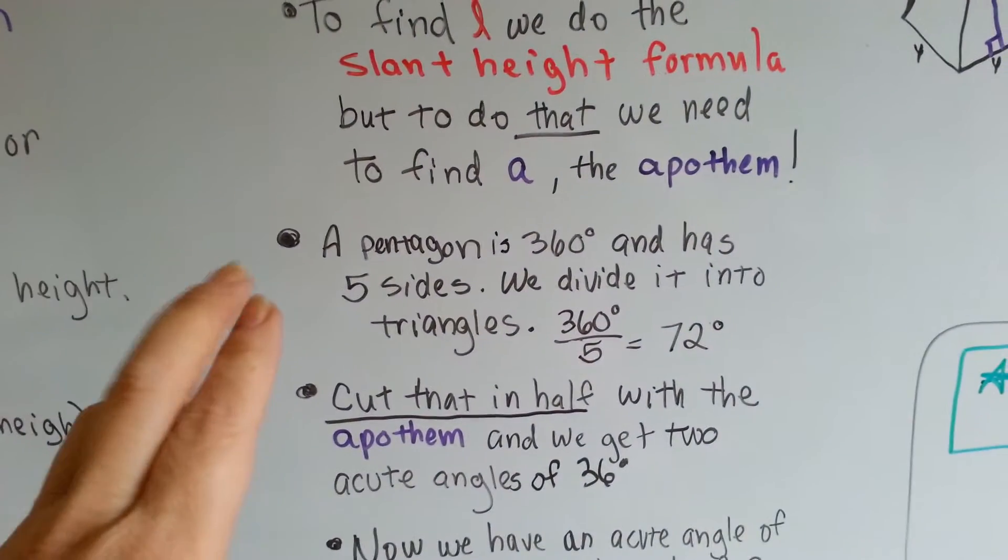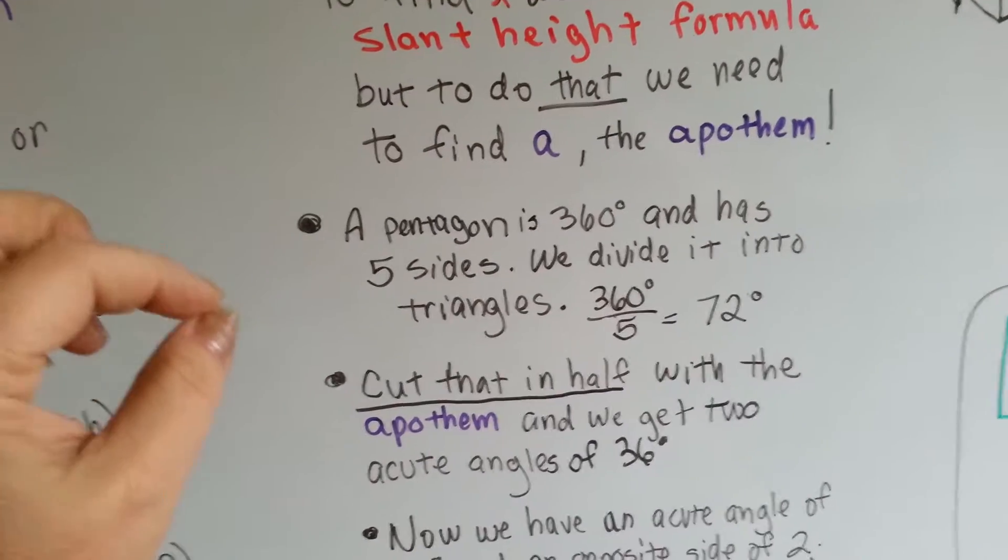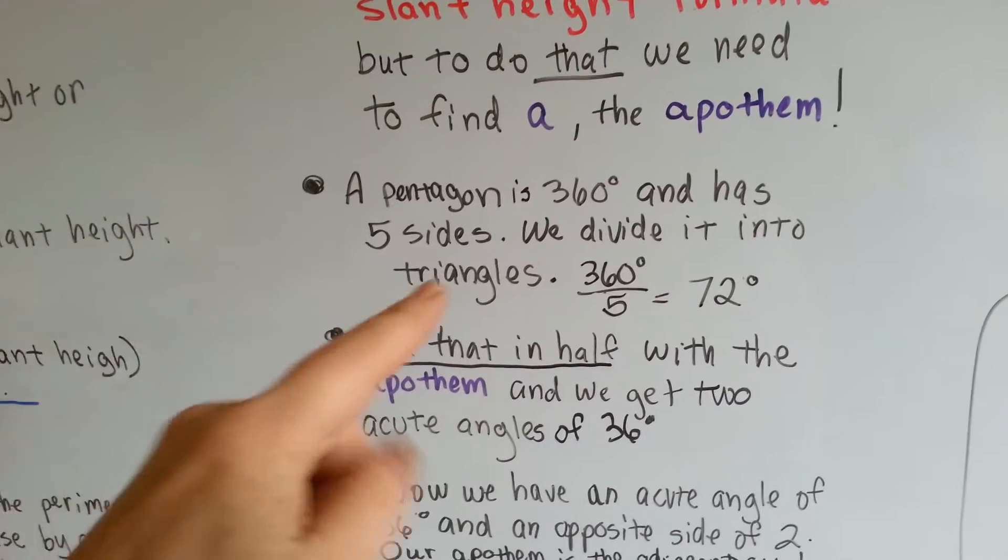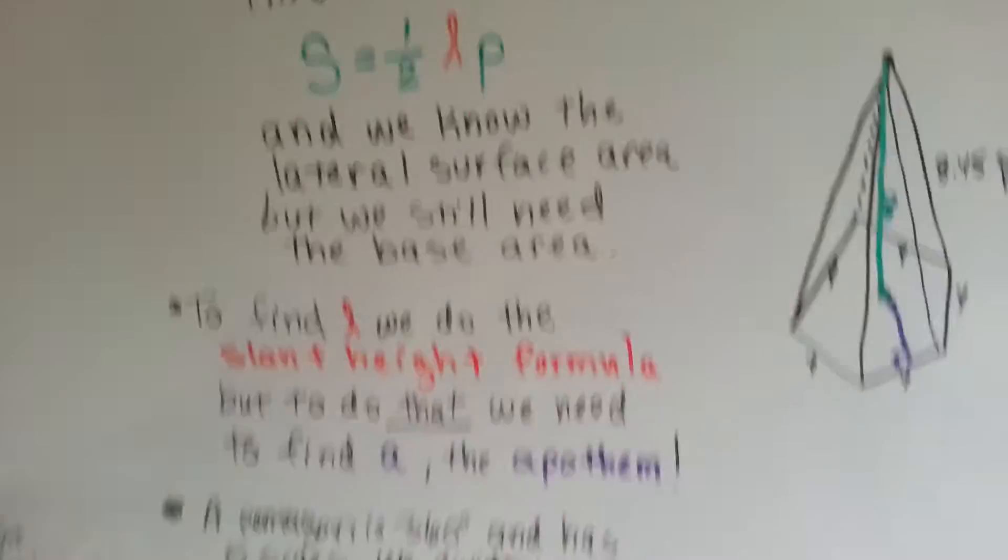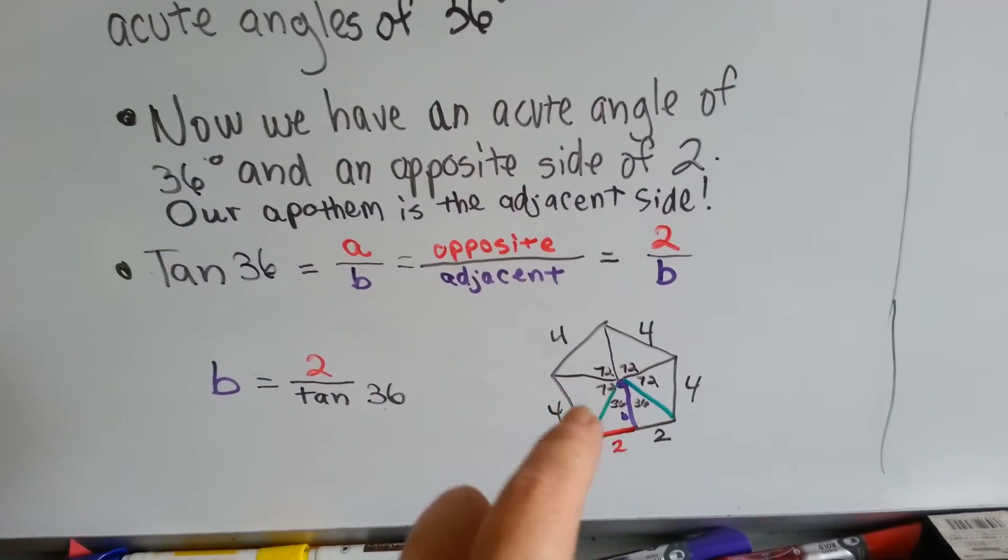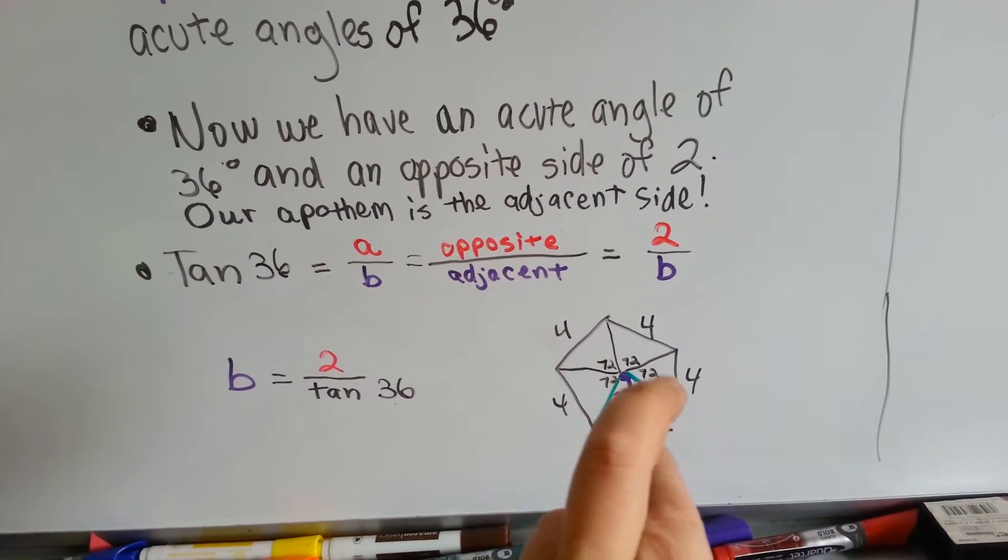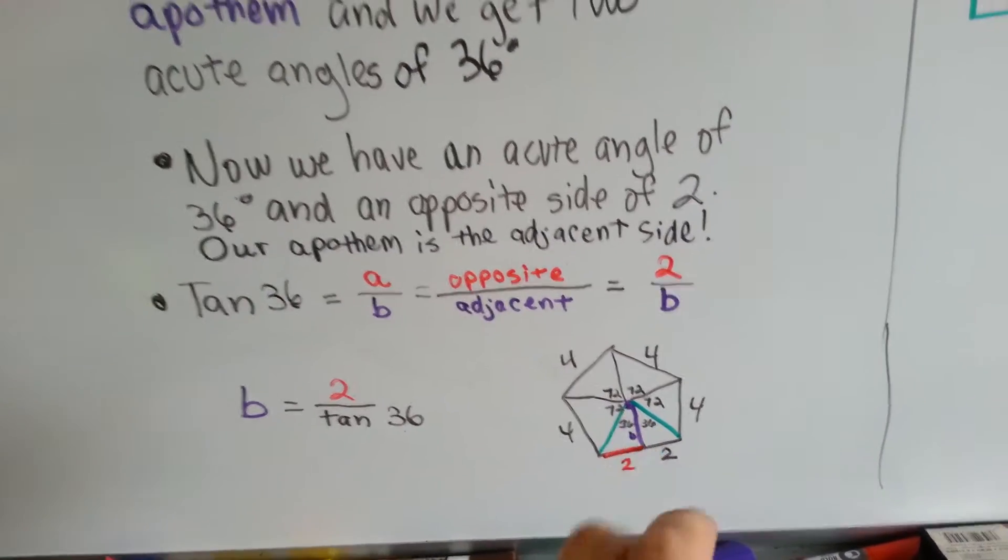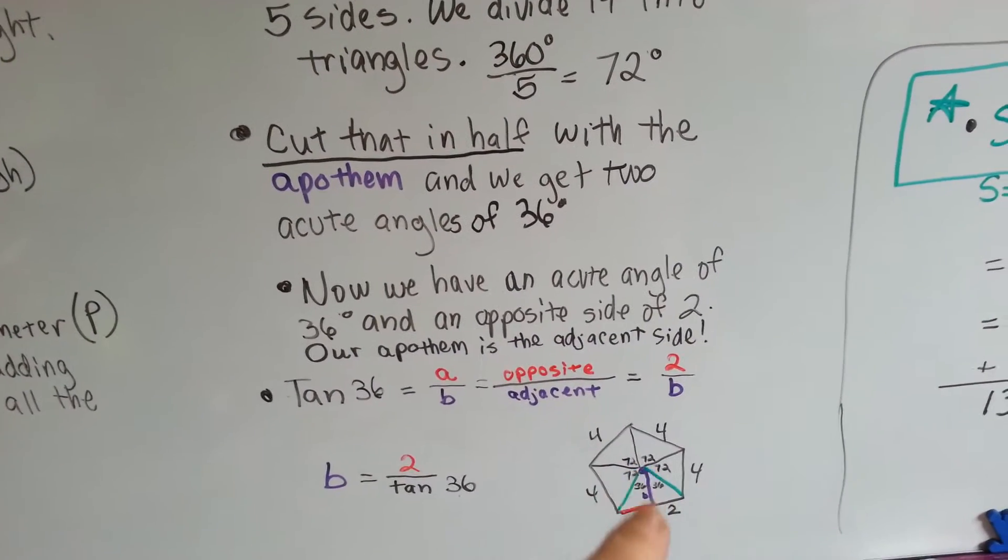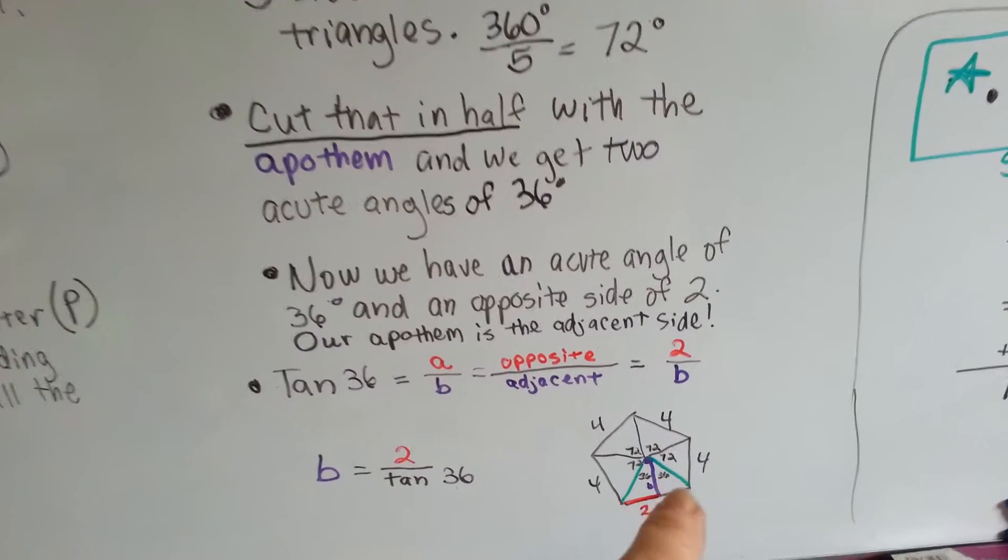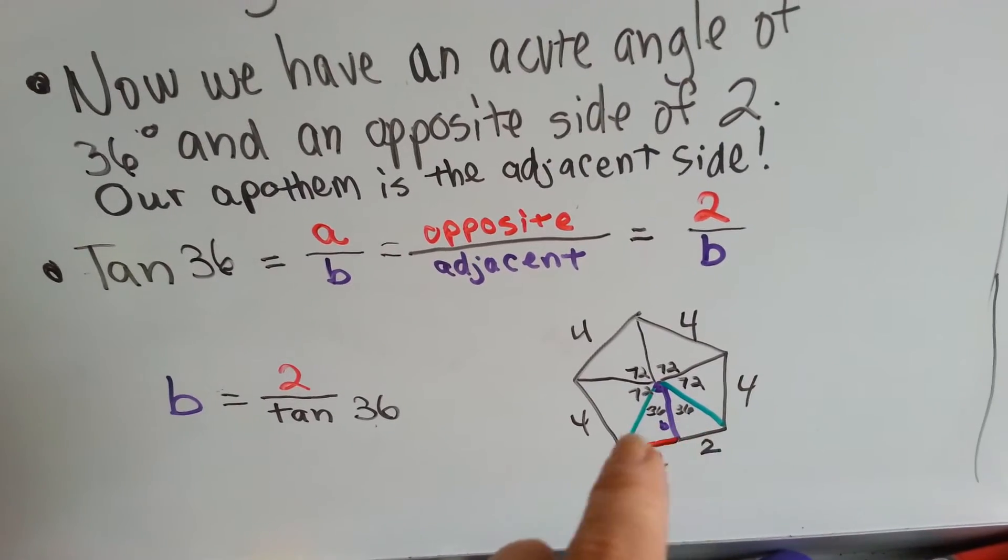A pentagon is 360 degrees around its five sides. If we divide that into triangles, we can solve it easier. So, 360 divided by 5 is 72 degrees for each angle. So, we would have a pentagon broken up into these different triangles. We got one, two, three, four, and this fifth triangle, we're going to cut it in half. By cutting that one in half, we get the apothem right there bisecting that side. We get two angles. Where each of these were 72 degrees, we now get two angles that are 36.